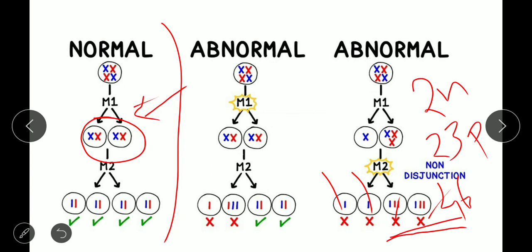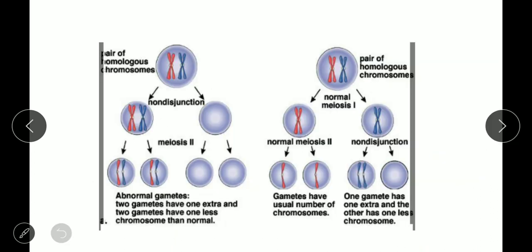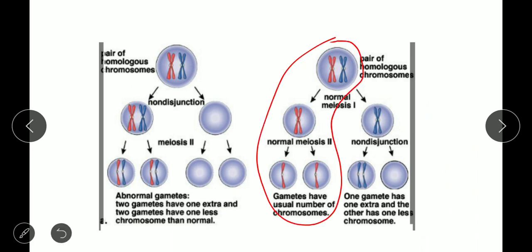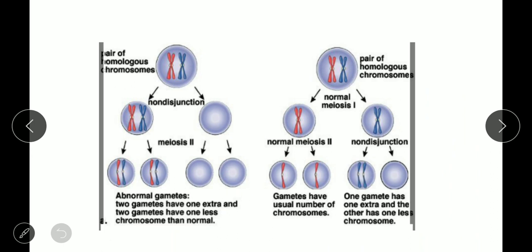The 2n+1 condition means 46+1 = 47 chromosomes. In gametes, normally there is the usual number of chromosomes. But due to non-disjunction, one gamete has one extra chromosome and two gametes have one less chromosome than normal. This is non-disjunction — it happens due to the failure of chromosomes to separate properly.